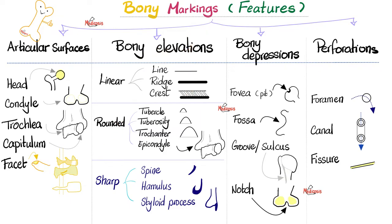For rounded elevations, we have the tubercle — a very small elevation. Tuberosity — bigger. Trochanter — way bigger. And the classic epicondyle, because it's above the condyle. For sharp bony elevations: spine — as sharp as a warm knife through warm butter; if you're not careful and you hit a spine, you can injure yourself. Hamulus — very similar but has a hook. Styloid process is classic, and you find it near your wrist joint and your ankle joint.